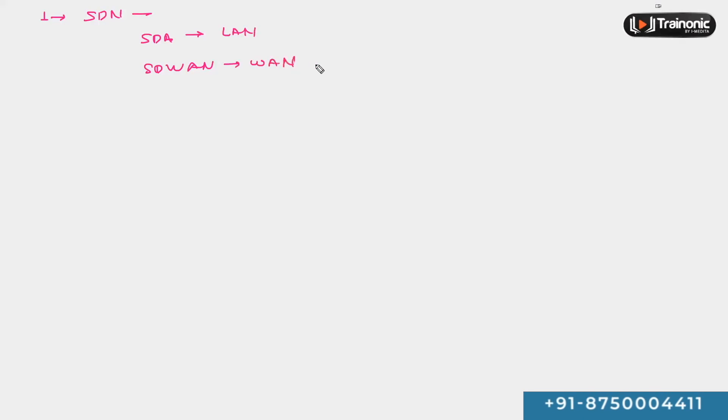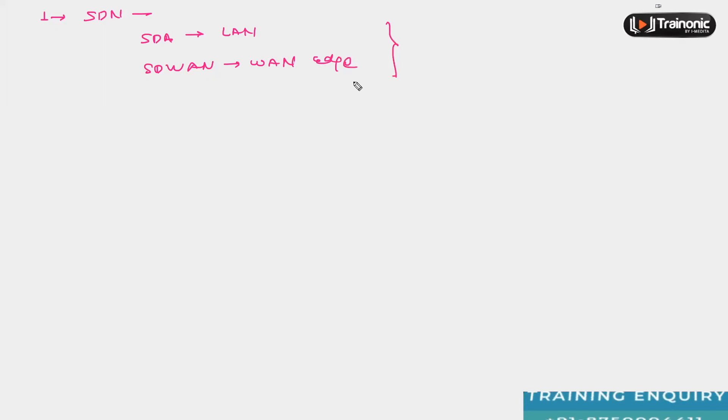To summarize everything covered in previous videos: to deal with a variety of challenges in our campus area network regarding WAN and LAN, Cisco introduced software defined networking. In SDN, they have SD-Access and SD-WAN. SD-Access is a solution to manage all devices in a local area network of the campus, and SD-WAN is the solution to manage all WAN devices. Together, these two solutions give us the option to control everything from a centralized point.